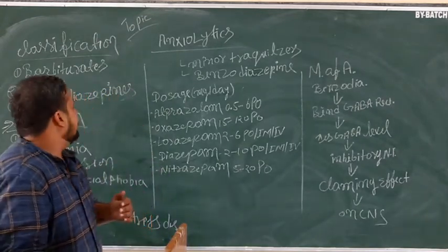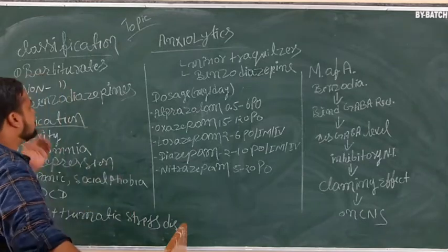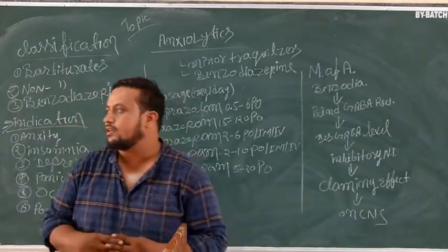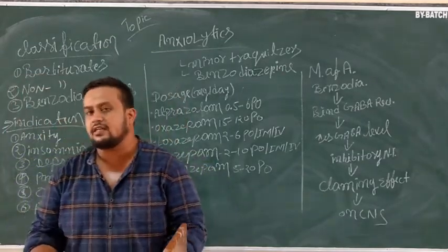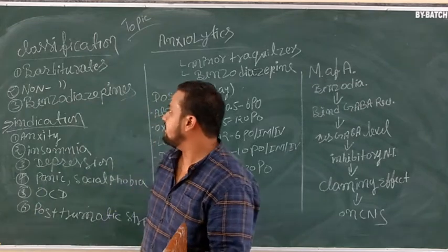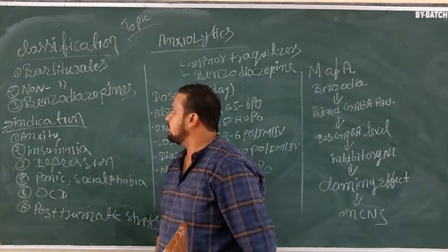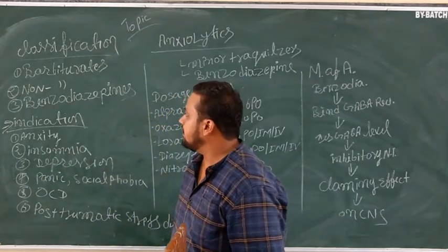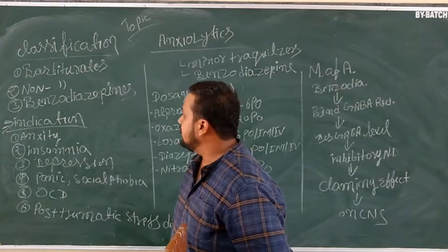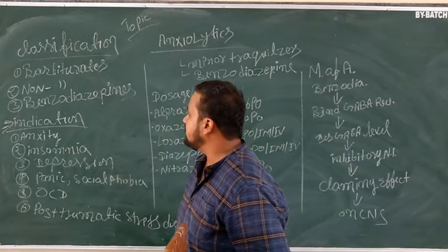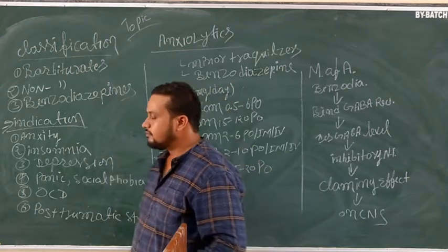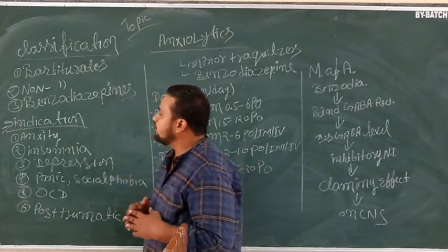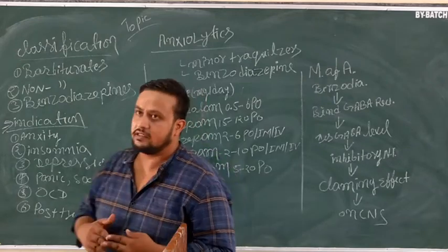Let's talk about the classification of anxiolytics. Anxiolytics are classified into: first, barbiturates; second, non-barbiturates; and third, benzodiazepines. So these are the three main classifications of anxiolytics.